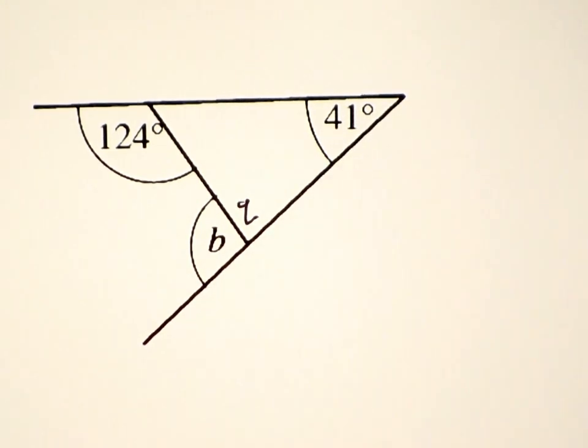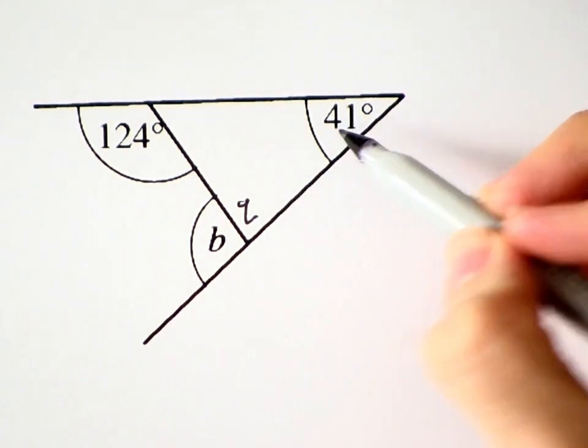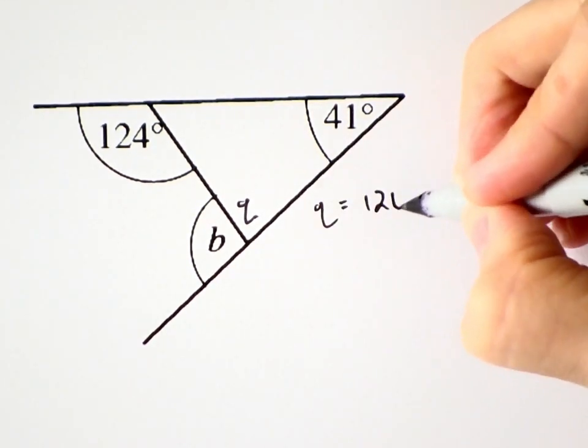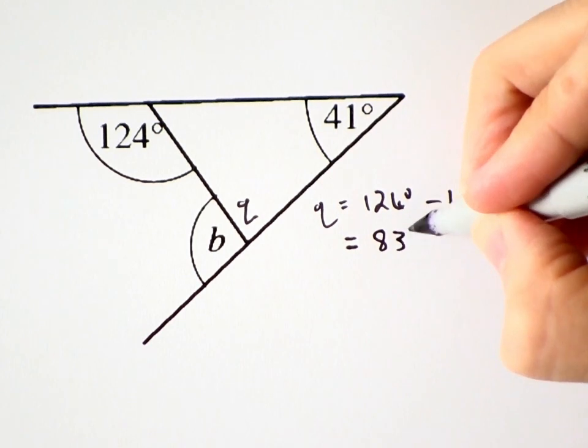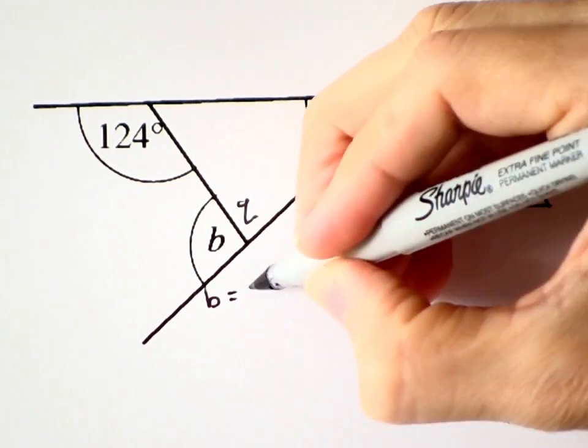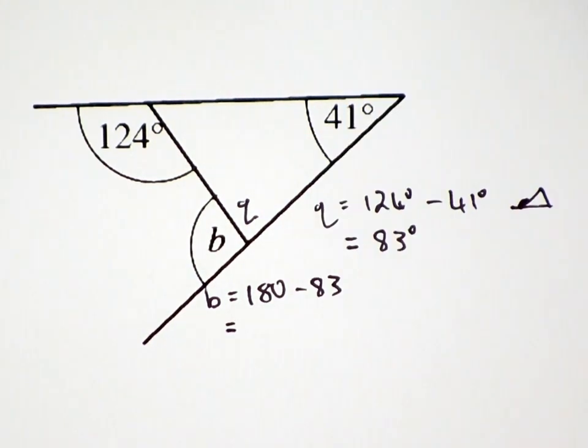Can I work out Q? Of course I can. It's an interior angle opposite this external angle. So Q must be 124 minus 41, which is 83 degrees. And then B must be 180 minus 83, which is 97 degrees.